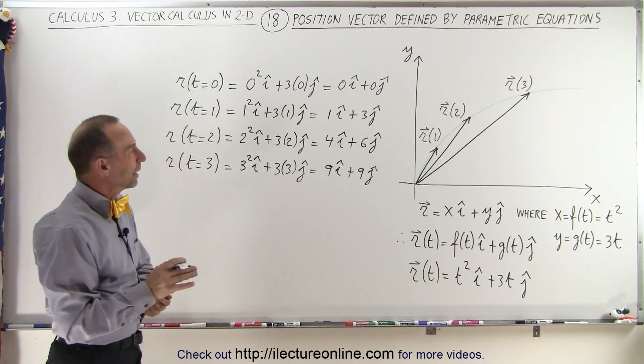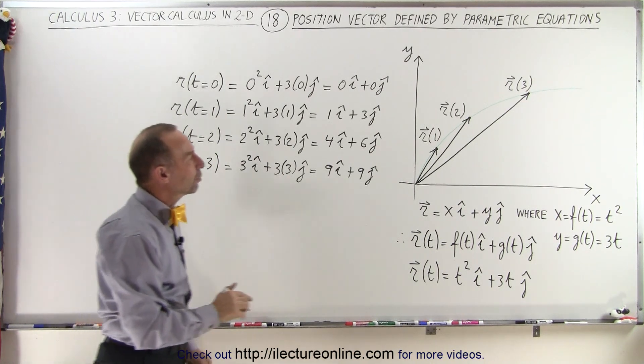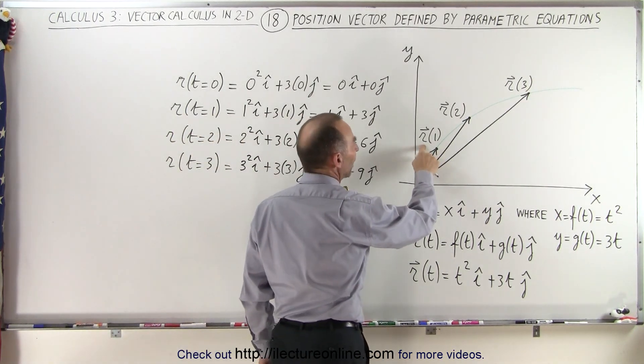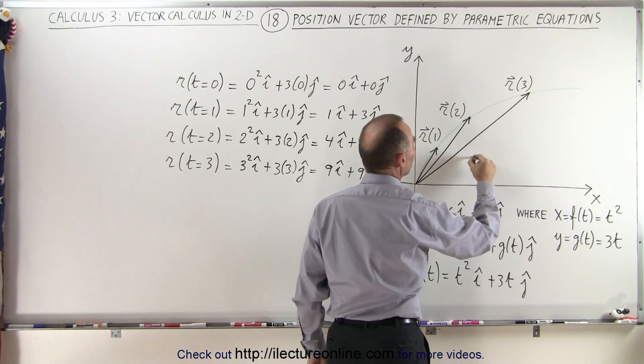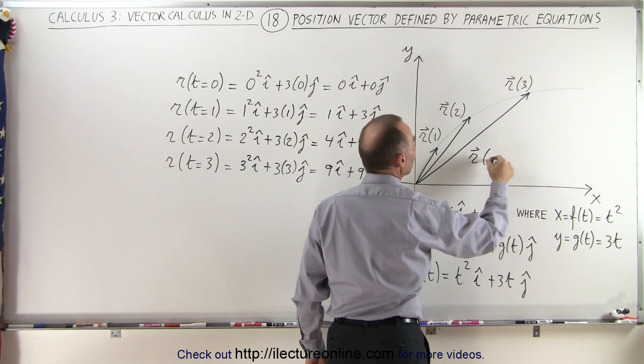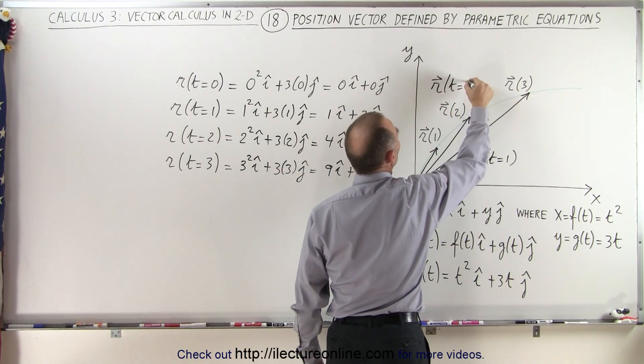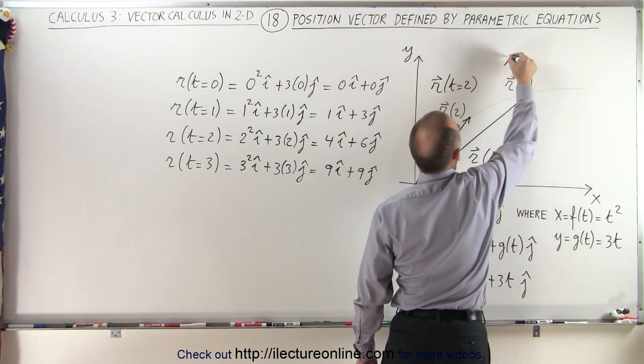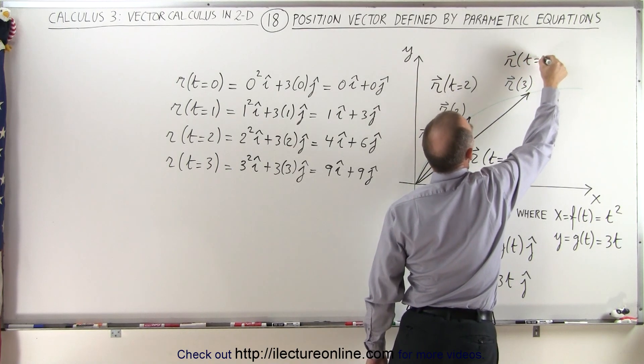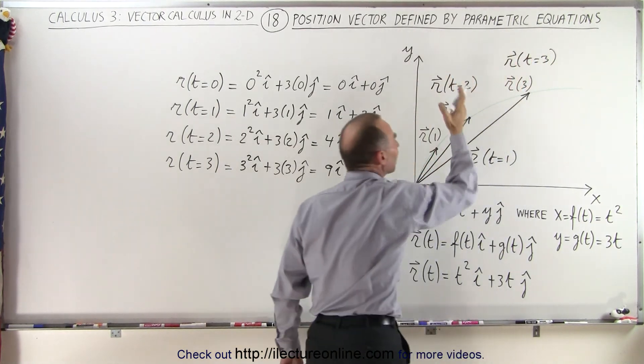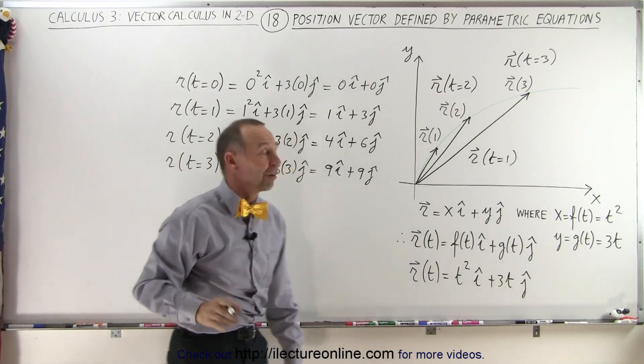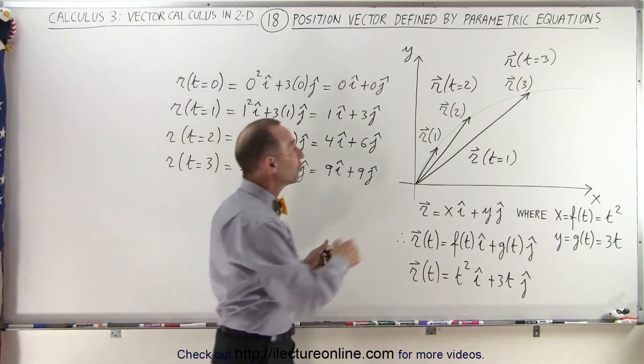One thing that I don't like, and I think that's sometimes confusing, is when they write things like this. I much rather would have seen that the position vector when t equals 1, and the position vector when t equals 2, and the position vector when t equals 3, because then clearly it shows what the parametric variable is. When all you see is just a number in there,